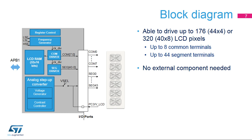Here is the block diagram of the LCD controller, which also shows the interface with the LCD display. This controller is able to drive 176 44x4 or 320 40x8 LCD pixels. It is made up of the frequency generator used to deliver the correct clock frequency to drive the LCD display, the COM and SEG drivers, the LCD RAM which contains pixel information — active and inactive — and the analog step-up converter used to adjust the contrast. No external components are required to make the controller work except an external capacitor connected to VLCD when the step-up converter is used.